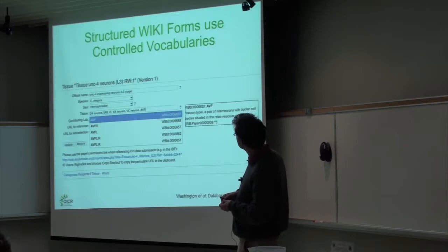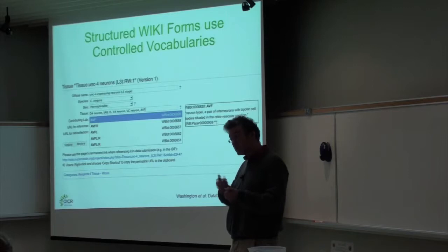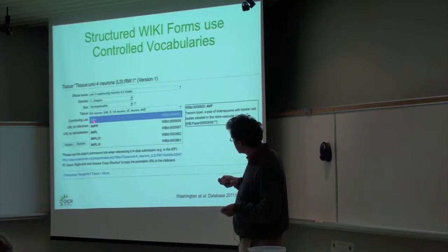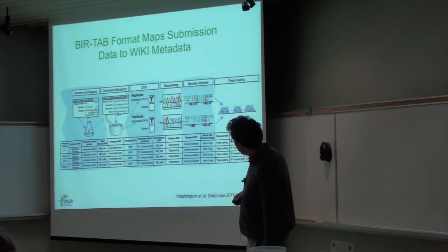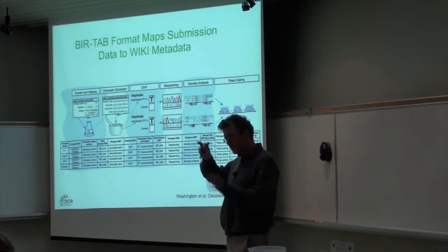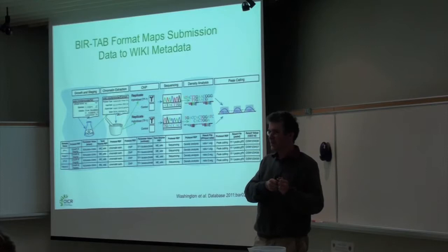We used controlled vocabularies as much as possible. For example, when a lab is describing a microdissected tissue, they pick from a controlled vocabulary — in this case, the worm anatomy ontology — for the tissue they were selecting. We tried to make it easy and form some uniformity. For each submission, we've broken the protocol up into 10 or 20 different wiki pages, and we need to show how they're put together to make complete materials and methods for that experiment.